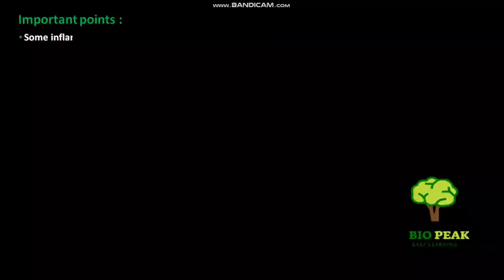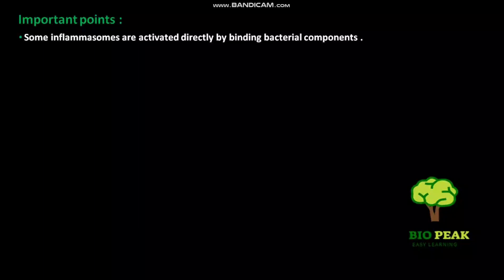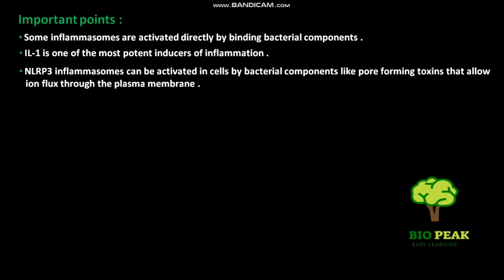Some inflammasomes are activated directly by binding bacterial components. IL-1 is one of the most potent inducers of inflammation. NLRP3 inflammasomes can be activated in cells by bacterial components like pore-forming toxins that allow ion flux through the plasma membrane.